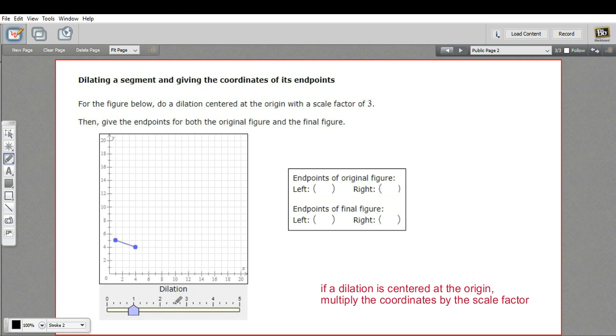Scale factors are always positive though. Negative scale factor doesn't make sense. So in this problem, we're doing a dilation centered at the origin with a scale factor of three. So this line segment, we're going to make another one that is three times as big as that and three times as far away from the origin, which is the center of this.